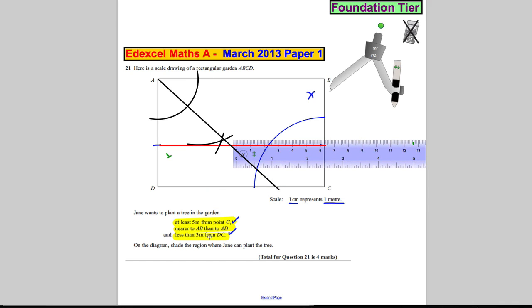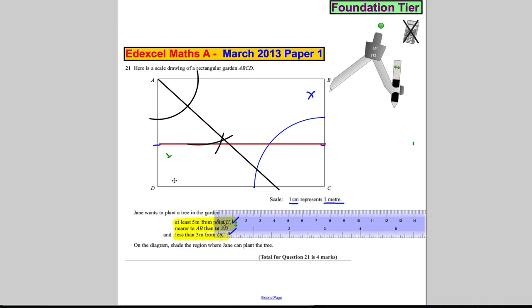And you want it nearer to AB than AD, so you want it above this line. So the only place that's below this line, above this line, and outside this line is this shaded region here. And that is the only region. Now that's a tricky question, and we're done.